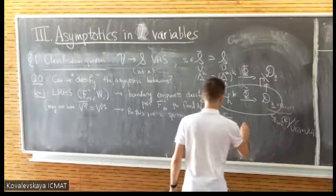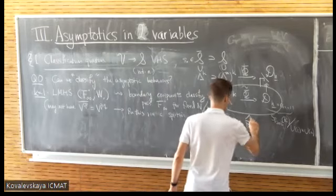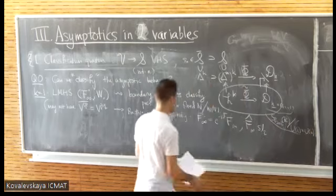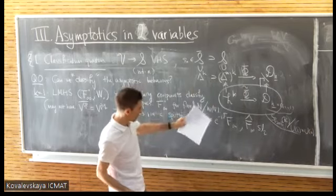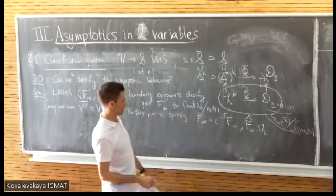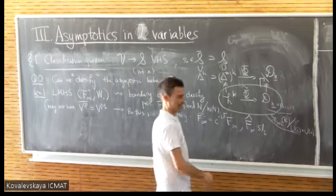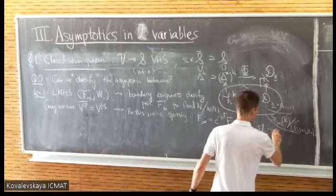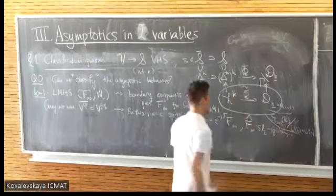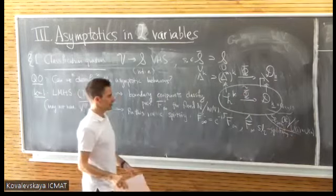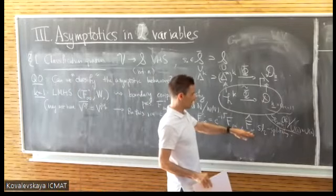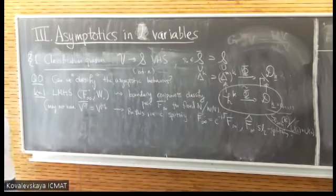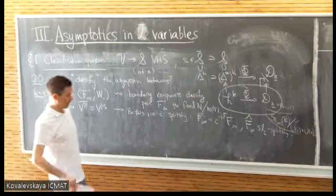There's another splitting called the SL2 splitting, which is more complicated — it involves multiplying by E to the zeta times E to the minus i-delta applied to F-infinity. I can't say more about it without spending half an hour; it's very complicated. One can just say that the nilpotent orbit coming from this approximates the original variation, or the original nilpotent orbit, a little better at infinity.